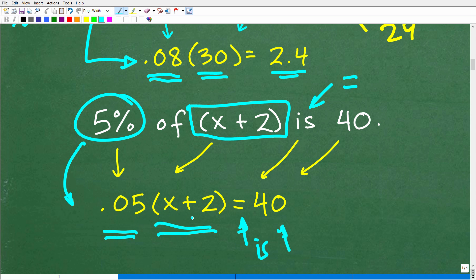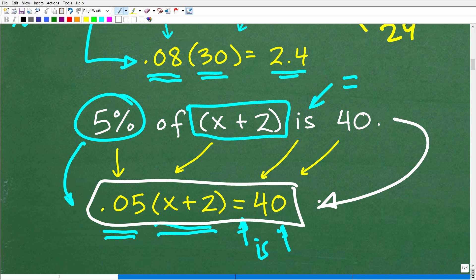So 0.05 times x plus 2 is equal to 40. This is the equation that we can build from this phrase right here. So we've got to be able to translate this phrase into this algebraic equation. And now from this point forward, all we need to do is be able to solve this equation for x.